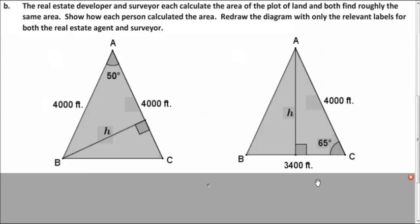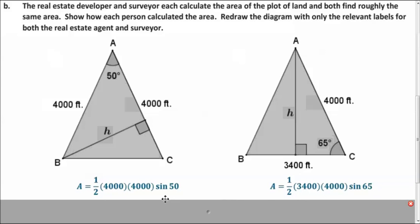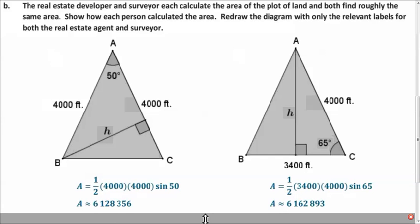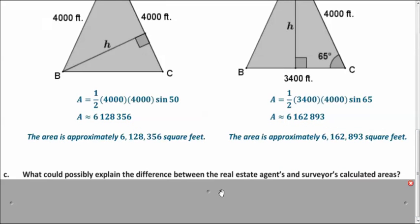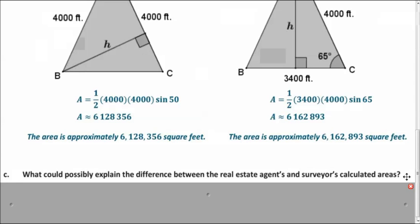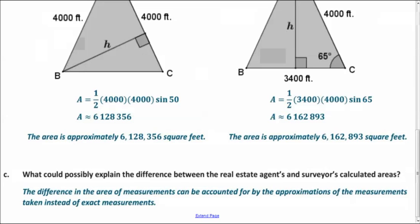So if you use the formula here, you end up with these two equations. And on the left-hand side, we get about 6,128,356. On the right-hand side, 6,162,893. We're talking about feet, so those would be square feet. So those numbers are close, but they're not exactly the same. So what could account for that difference? What was going on in this problem? Well, the triangle we drew isn't perfect. The difference in the area is due to the approximations that they made when doing the measurements. So in a perfect world, if you had a triangle with the exact angles and side lengths, then we would get the same answer. But unfortunately in this case, the tools weren't that precise.